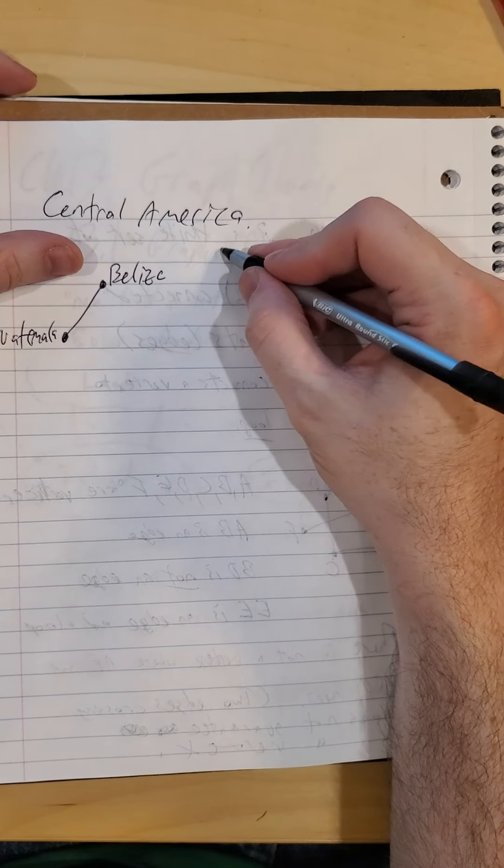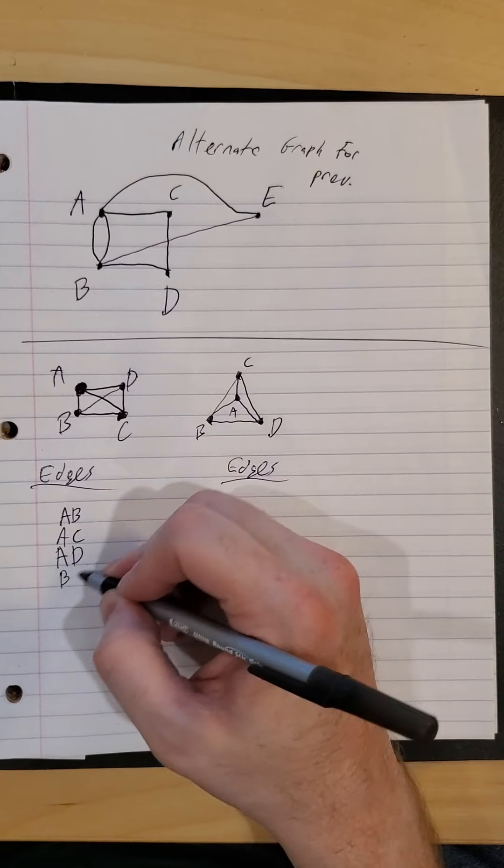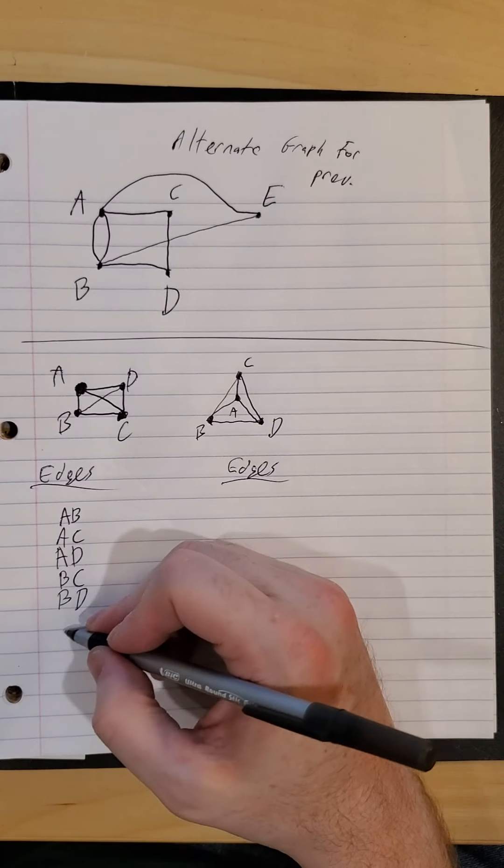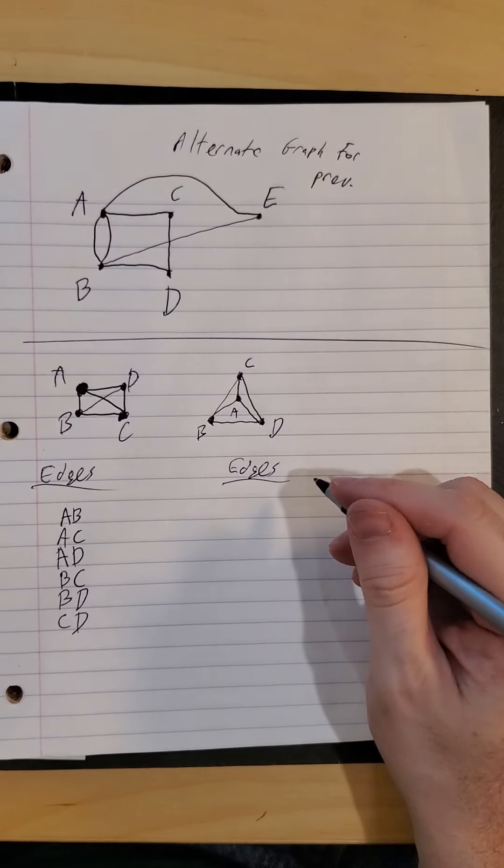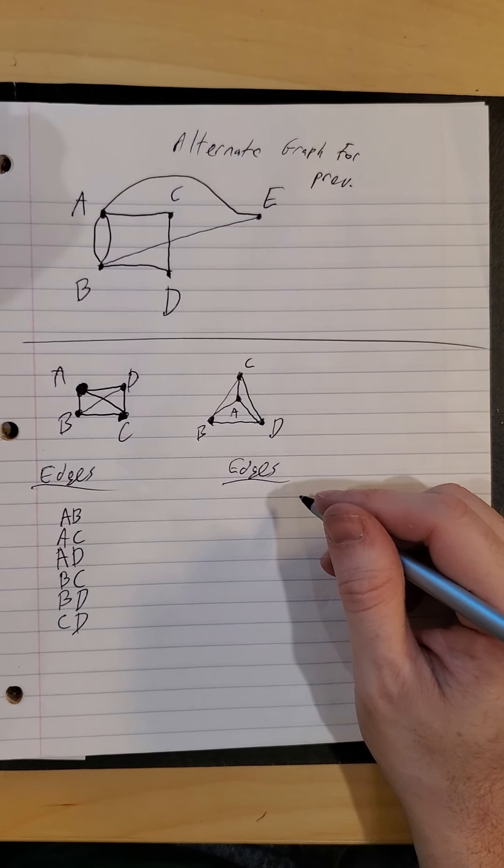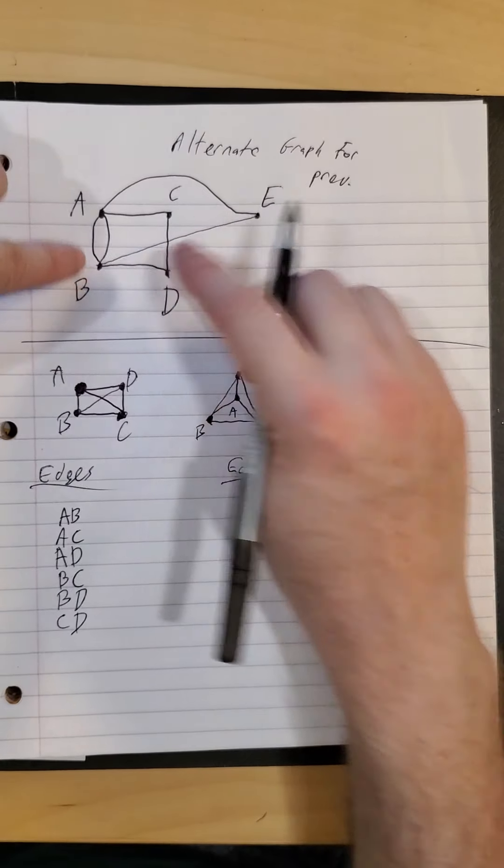Welcome back. So some edges that exist in graph one. A, B, A, C, A and D. They're connected. B and C are connected. B and D are also connected. And C and D were also connected. And it doesn't look like anyone was connected twice.